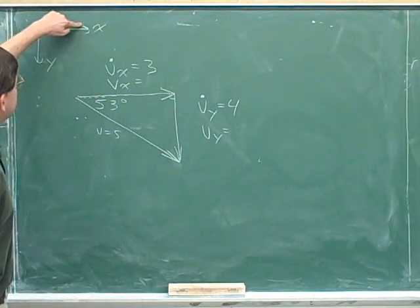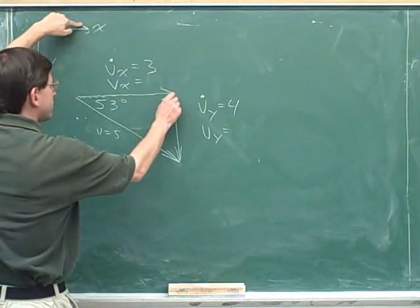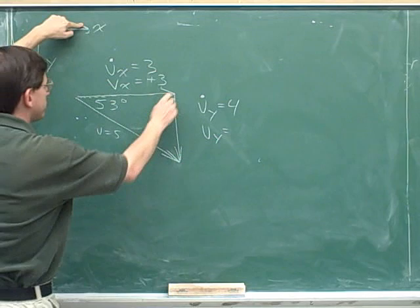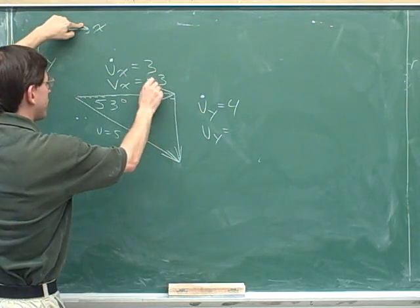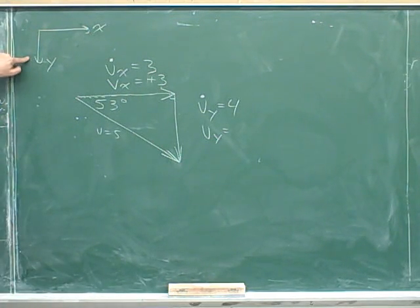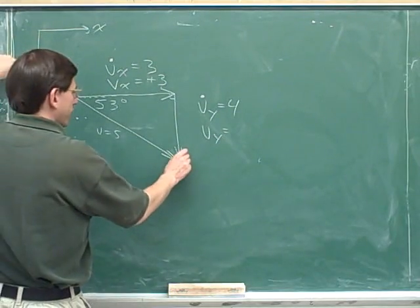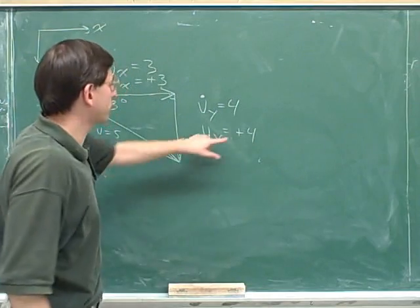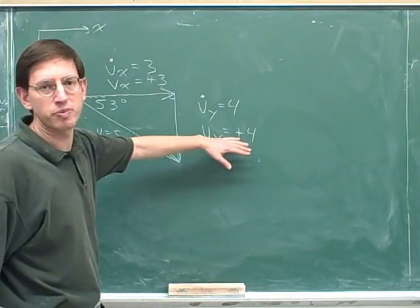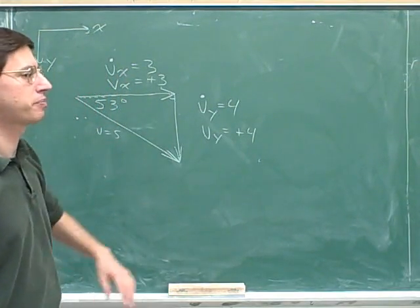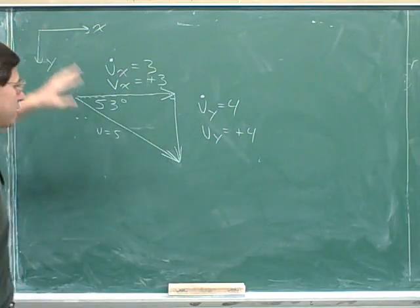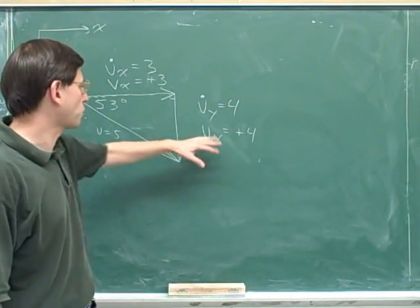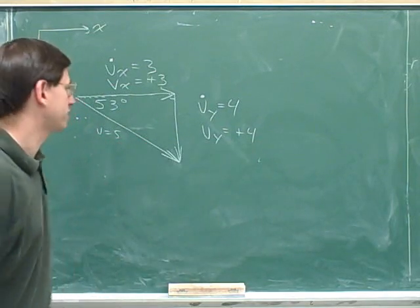The right is still positive, and this vector is pointing to the right, so it should be positive. The x-component is pointing to the right, so that's positive. How about vertically? Now down is positive, and the y-component is pointing down, so now the y-component is positive.